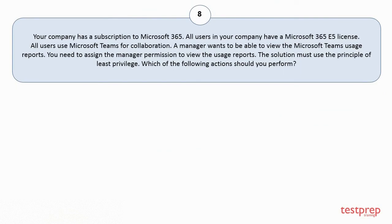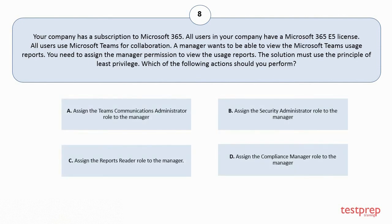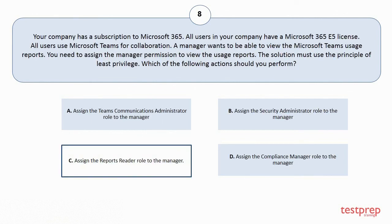Question 8. Your company has a subscription to Microsoft 365. All users in your company have a Microsoft 365 v5 license. All users use Microsoft Teams for collaboration. A manager wants to be able to view the Microsoft Teams usage reports. You need to assign the manager permission to view the usage reports. The solution must use the principle of least privilege. Which of the following actions should you perform? Your options are: A. Assign the Teams Communications Administrator role to the manager. B. Assign the Security Administrator role to the manager. C. Assign the Reports Reader role to the manager. D. Assign the Compliance Manager role to the manager. The correct answer is Option C.